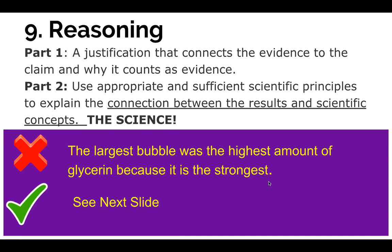Finally, and this is the hardest part for most students, is your reasoning. It's hard because you actually have to explain what's going on in the lab and relate it to the science you're supposed to learn. Part one is a justification that connects the evidence to the claim and why it counts as evidence — why were those numbers appropriate and sufficient? Part two is using appropriate and sufficient scientific principles to explain the connection between the results and the scientific concepts you're supposed to be learning in class.